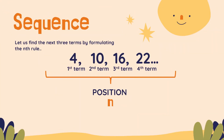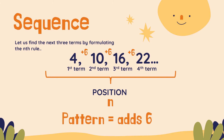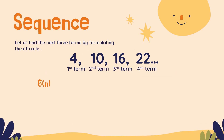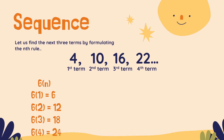Now, let us have another sequence: 4, 10, 16, 22. Again, we are going to use N as the position. What's the pattern here? To get to the next term, it adds 6. So we are going to use 6N, or 6 times N: 6 times 1 equals 6; 6 times 2 equals 12; 6 times 3 equals 18; and 6 times 4 equals 24. That gives us 6, 12, 18, 24 — but it's not the same as our sequence.